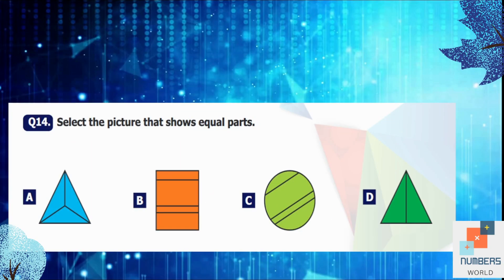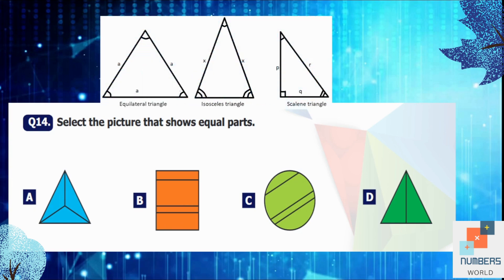Question number 14: Select the picture that shows equal parts. So here option B and C are clearly not our answers because the size of the parts are different in them. We will focus on our option A and D. So basically we have three types of triangles. The first one is equilateral triangle in which all the sides are of same length. The second one is isosceles triangle in which two sides of the triangle are same and the third one is of different size. And third one is scalene triangle which has three sides of different lengths. So in option A an isosceles triangle is given. So it will have two equal parts and third will be different. So we will not choose it. Option D is our answer which is clearly showing two equal parts.